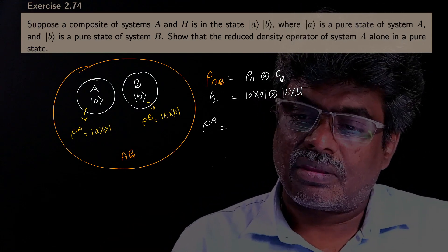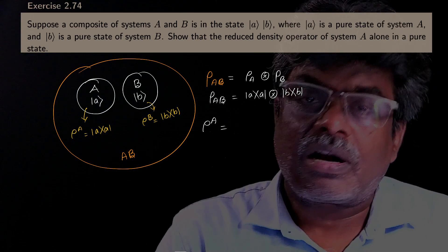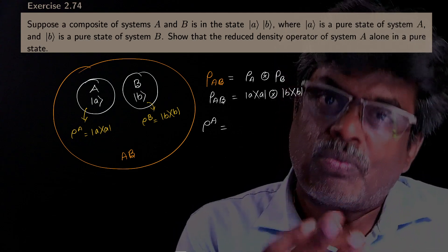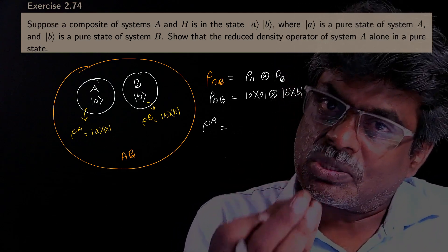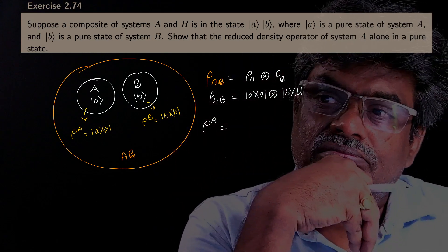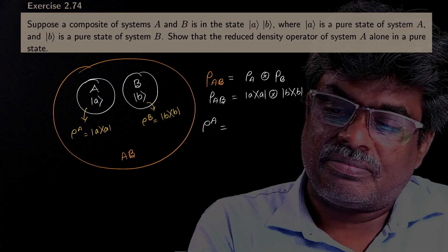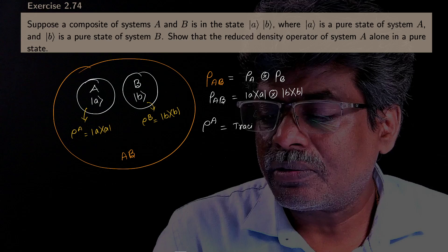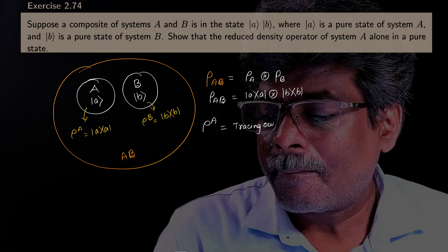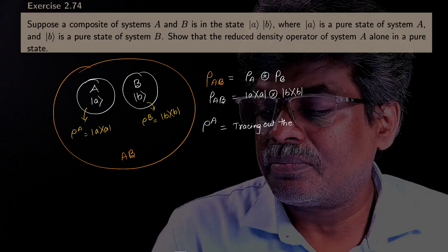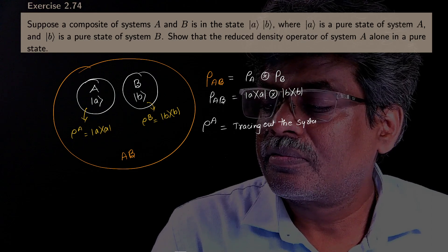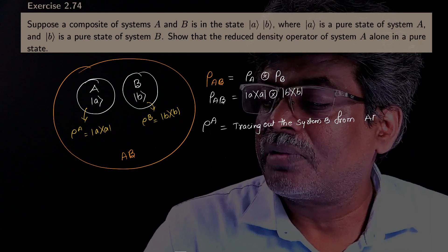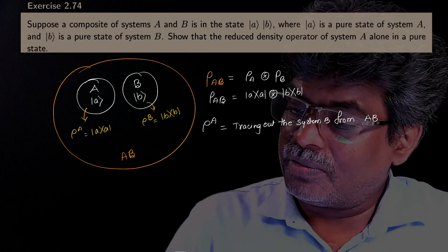How to get ρ_A? We already have the composite system density operator ρ_AB. If you want to get the density operator corresponding to A alone, just trace out system B. That means this is nothing but tracing out B from the composite system AB.